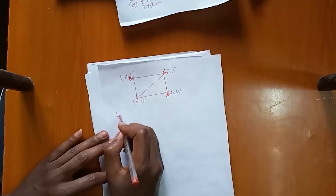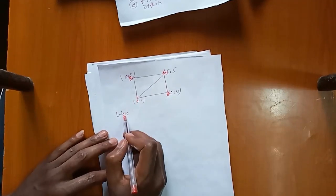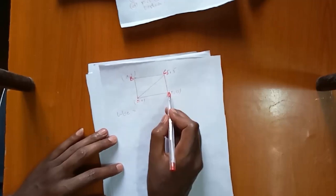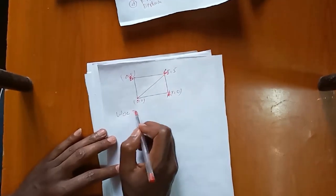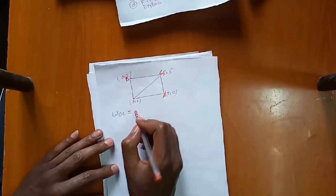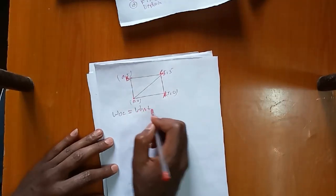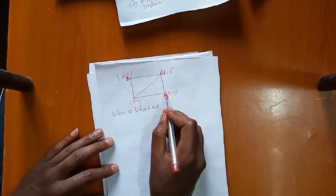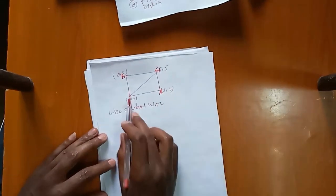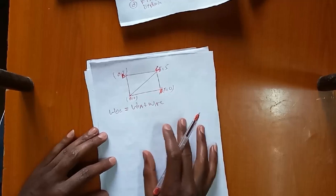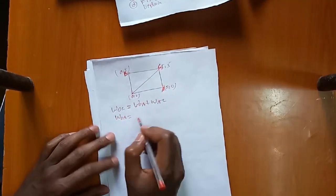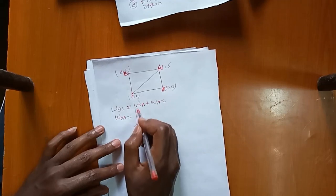We will write the work for path OAC — from O to A to C. The work is W equals the integral of F·dr. Along path OA, we work in the x-direction. The work along OA equals the integral from 0 to 5 of F·dx.